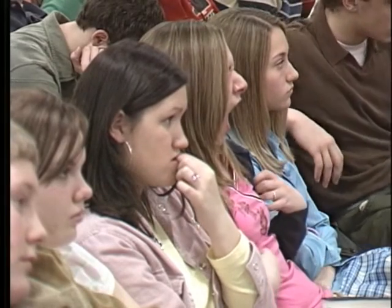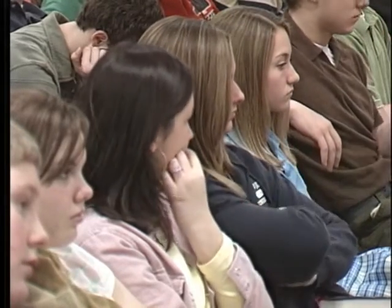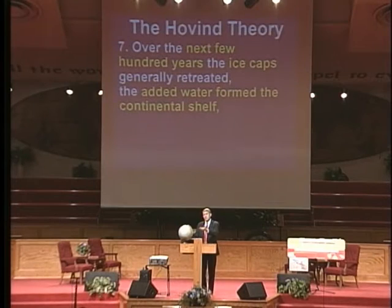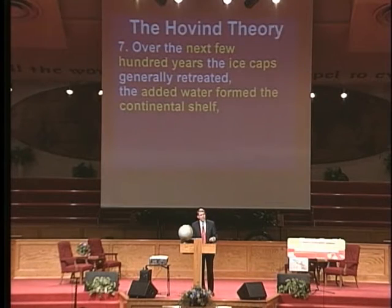Some places lift up, other places sink down. That's going to form ocean basins and mountain ranges. And the runoff would cause incredible erosion like Grand Canyon in a couple of weeks. Over the next few hundred years, the ice caps would slowly melt back, retreating to their current size. The added water from the ice melt would raise the ocean level, creating what's called a continental shelf.